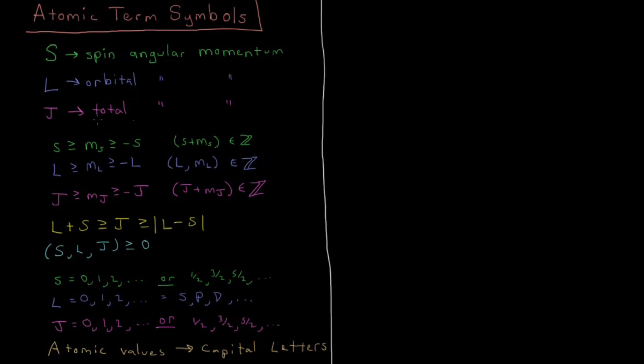So then this leads us into atomic term symbols. So in our term symbol, we're going to have a superscript on the left, whose value is going to be 2s plus 1. Then we're going to have a letter, which is going to be the value of l, in terms of s, p, d, etc. And then we're going to have a subscript on the right, which is going to be j. And this thing is going to be our total term symbol.